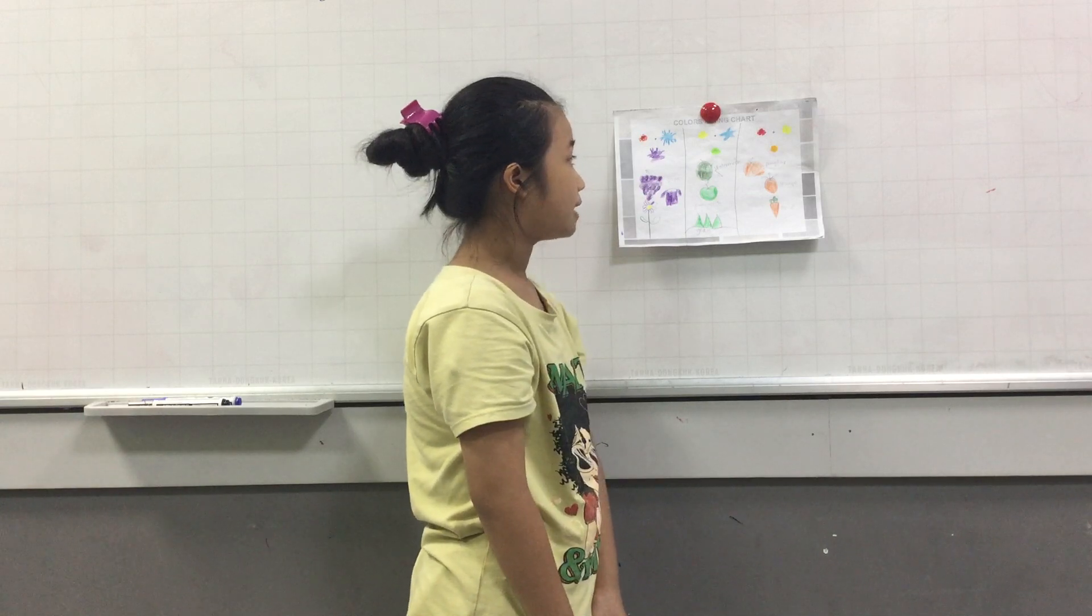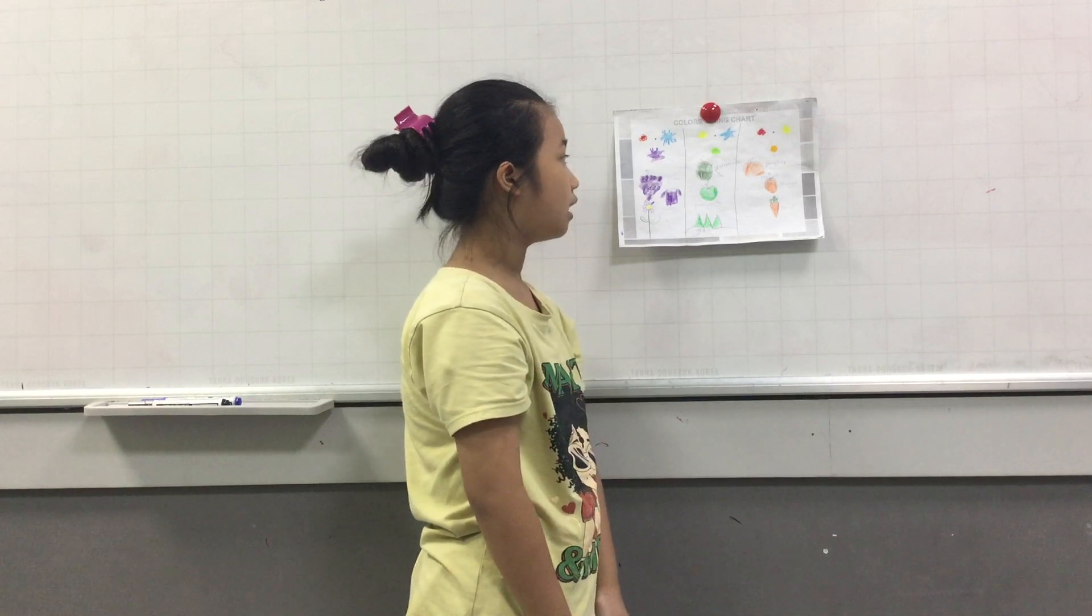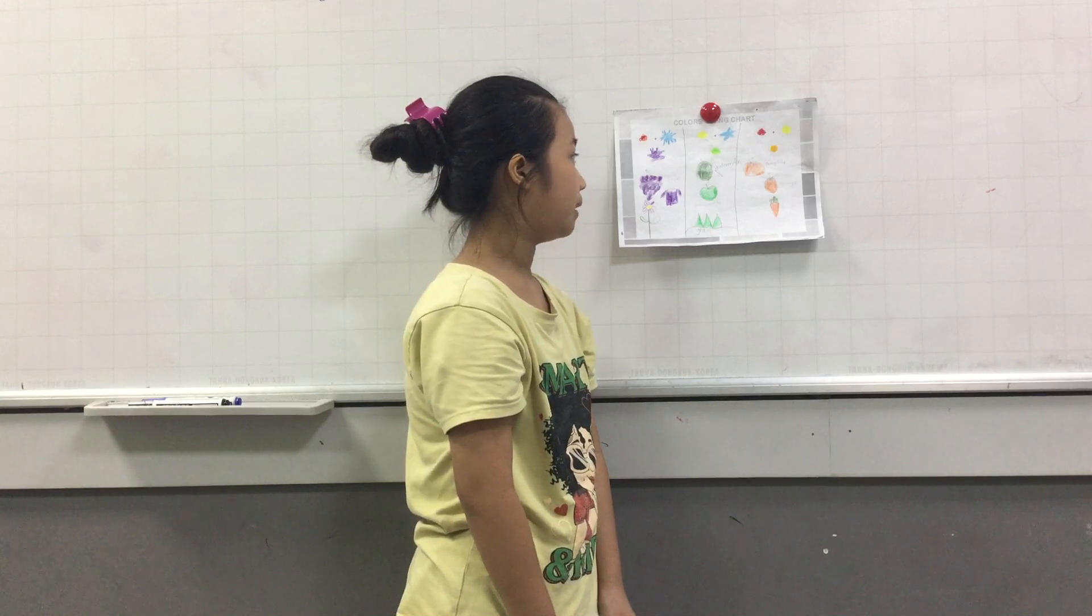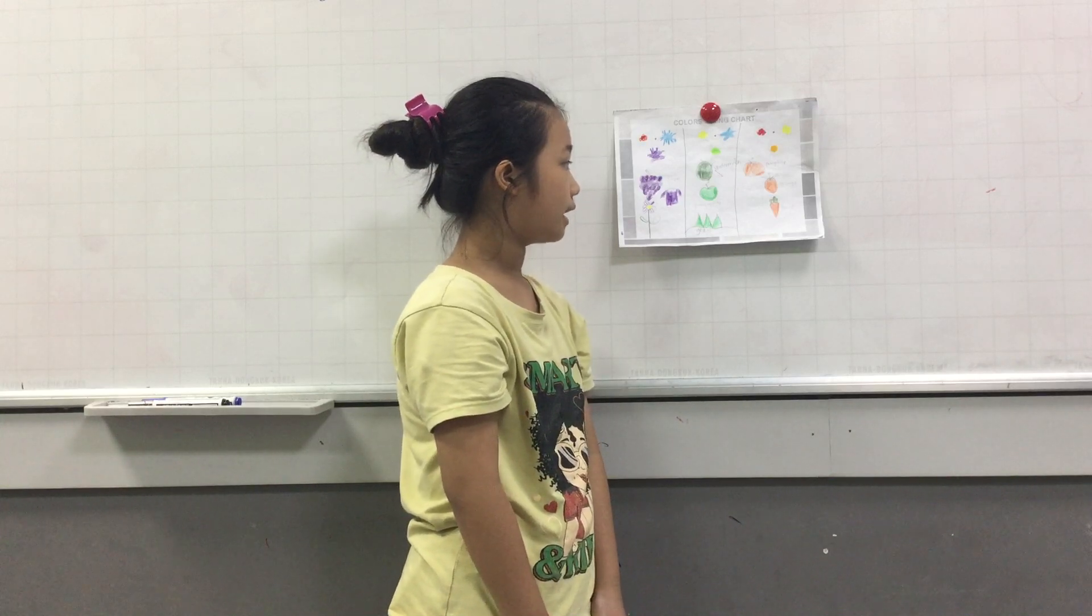I can mix red and yellow to get this color. I can find orange in pumpkin, in fruits and carrots.